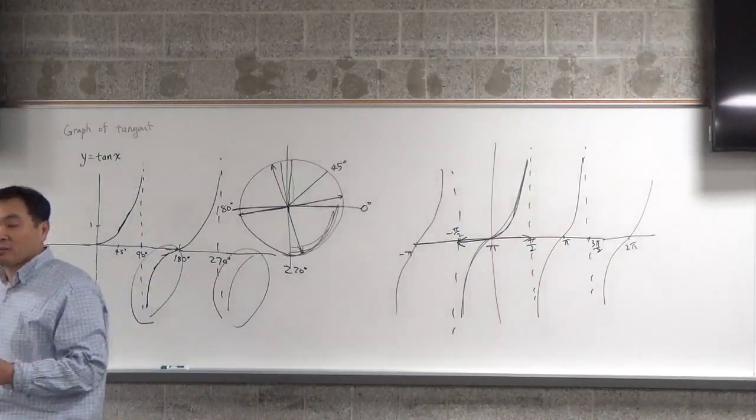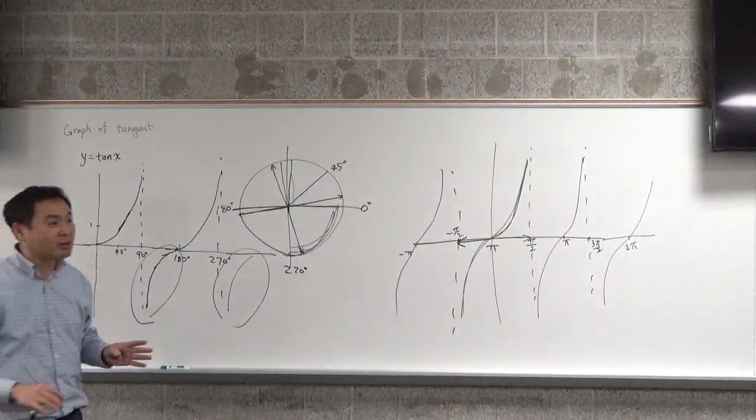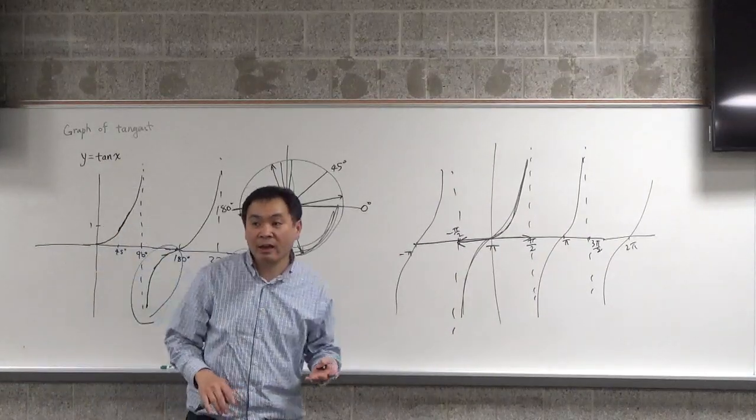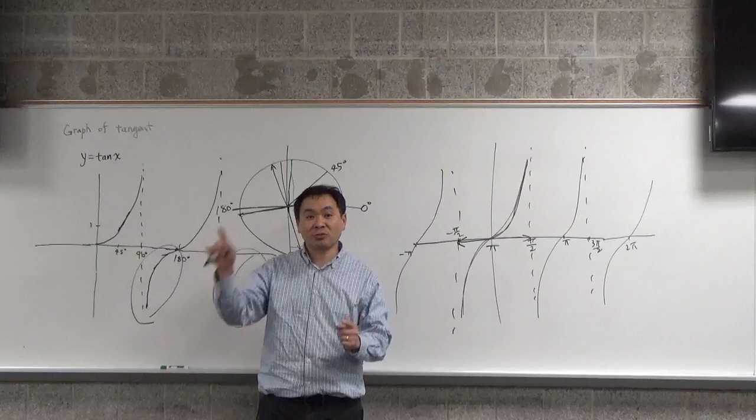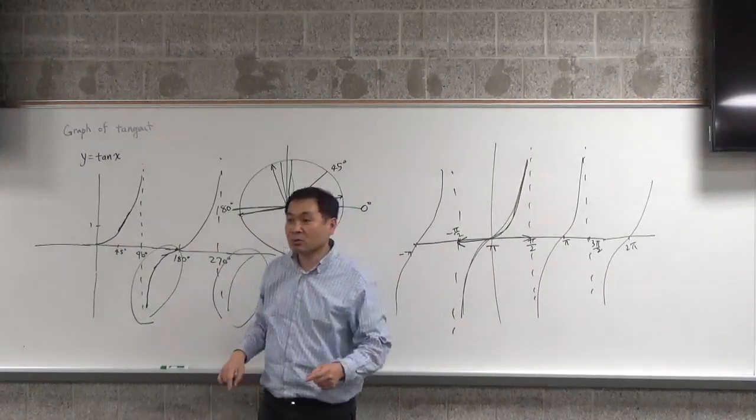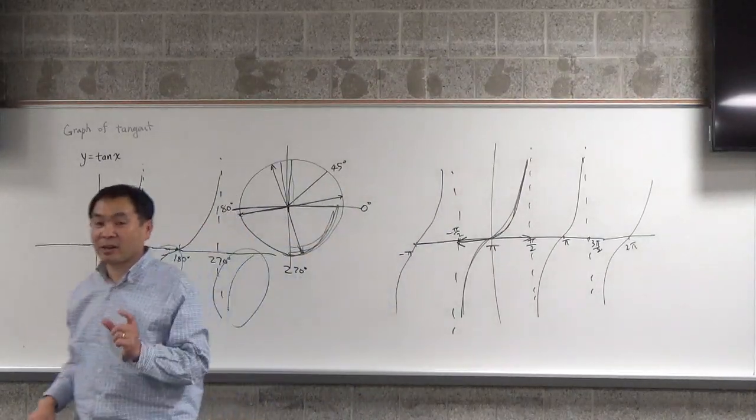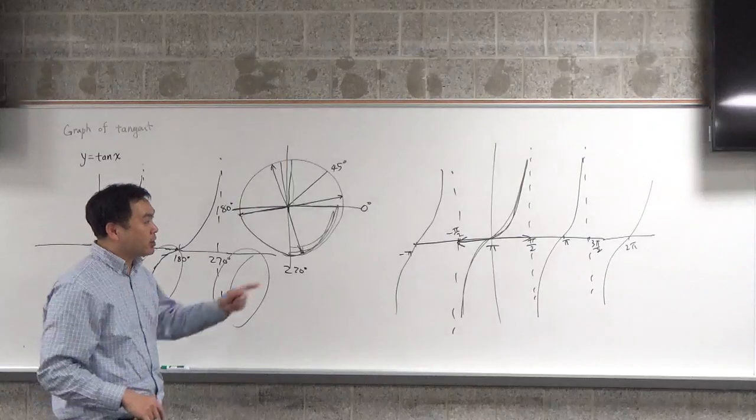So it's, again, a periodic function, just like sines and cosines are. But sine and cosines have periods of 2 pi. They repeat every full circle. This happens to repeat every pi, 180 degrees. And that's the graph.